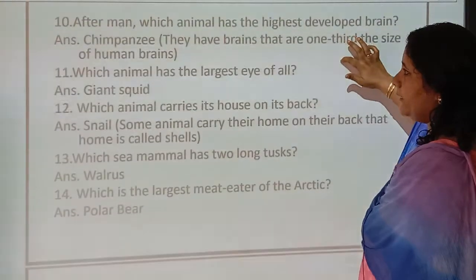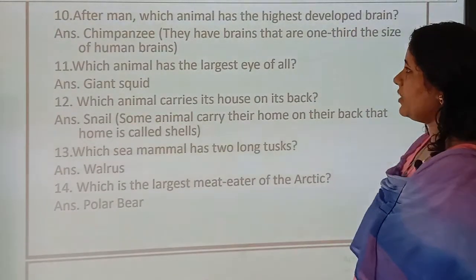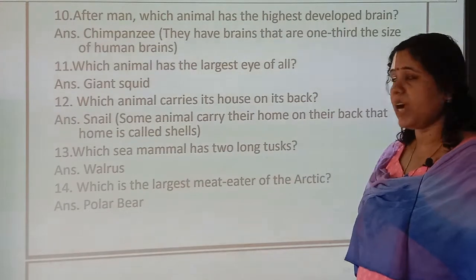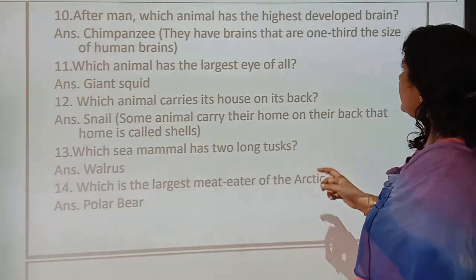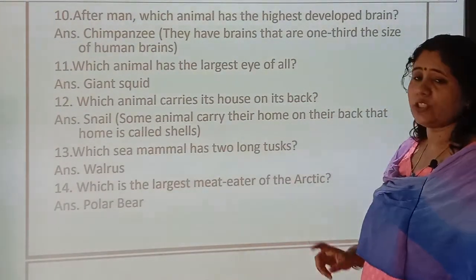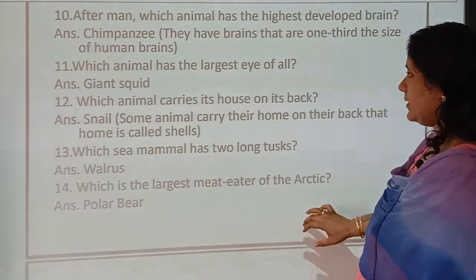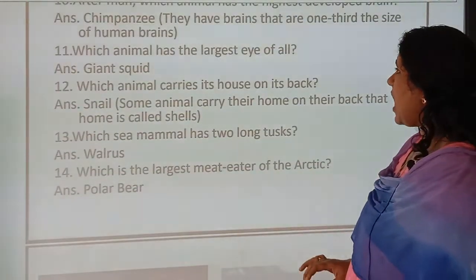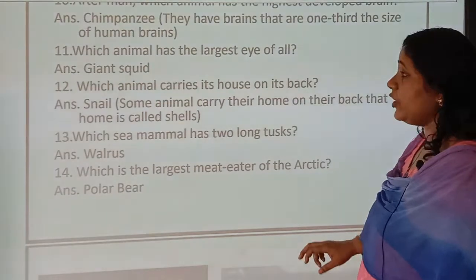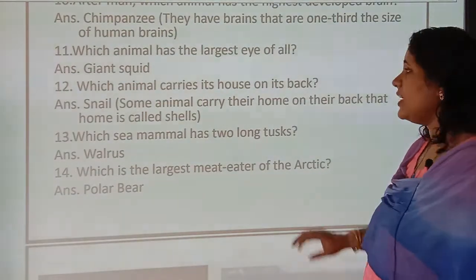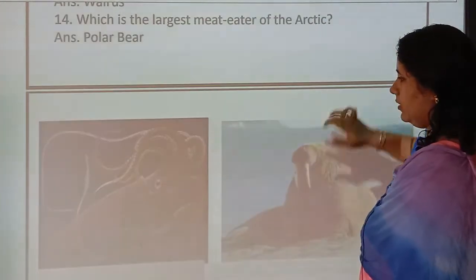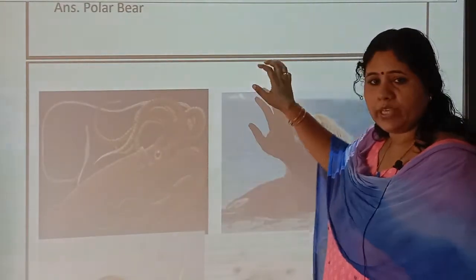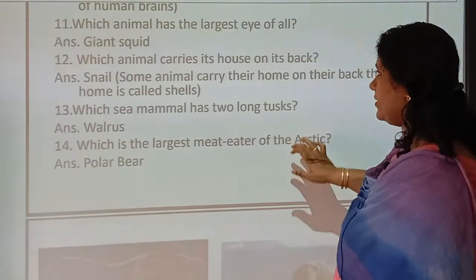Question number ten: after man, which animal has the highest developed brain? Chimpanzee. They have brains that are one third the size of human brains. Which animal has the largest eye of all? The answer is giant squid — see the eyes, very big.